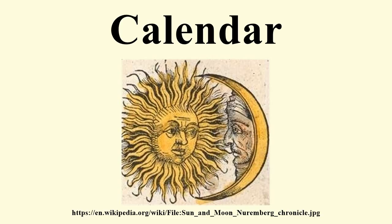An astronomical calendar is based on ongoing observation. Examples include the religious Islamic calendar and the old religious Jewish calendar in the time of the Second Temple. Such a calendar is also referred to as an observation-based calendar. The advantage is that it is perfectly and perpetually accurate; the disadvantage is that working out when a particular date would occur is difficult. An arithmetic calendar is one based on a strict set of rules; an example is the current Jewish calendar. Such a calendar is also referred to as a rule-based calendar, and its advantage is the ease of calculating when a particular date occurs.